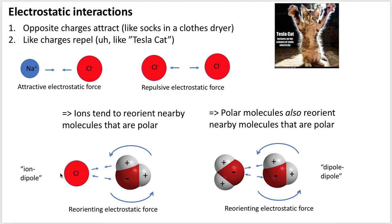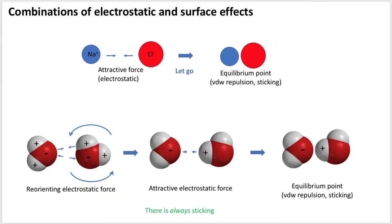The first case — an ion interacting with a polar molecule — is called an ion-dipole interaction, and the second — two polar molecules interacting — is called a dipole-dipole interaction. In both cases, the result is a reorienting of the second molecule.